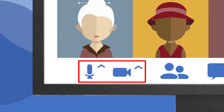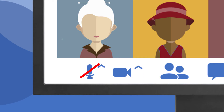Clicking or tapping the microphone icon turns the microphone on or off. Clicking or tapping the camera button turns the camera on and off. A red diagonal bar across the icon indicates that the feature is turned off.